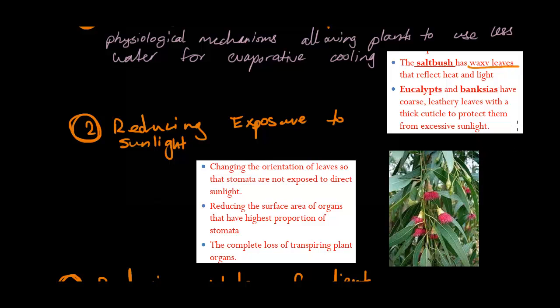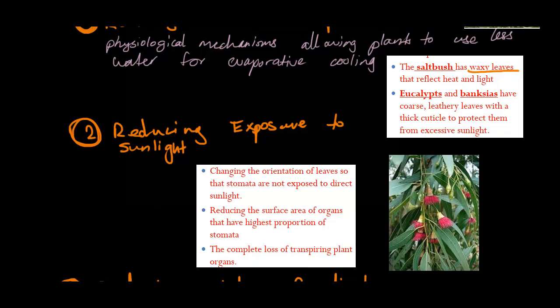And lastly, an example for this one, an Australian example to be precise, would be eucalypt trees, where their leaves actually go downwards every time there is a lot of sun. And that's mainly because of this reason, to reduce exposure to sunlight. And at the end, their main aim is to maintain as much water balance as they can, as well as survive in those environments.